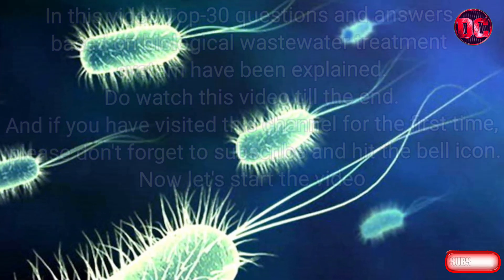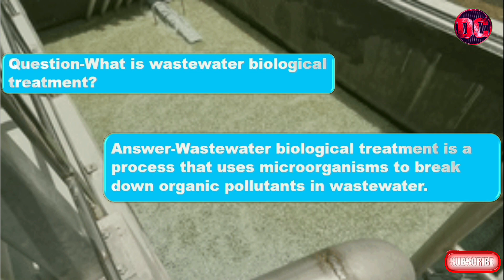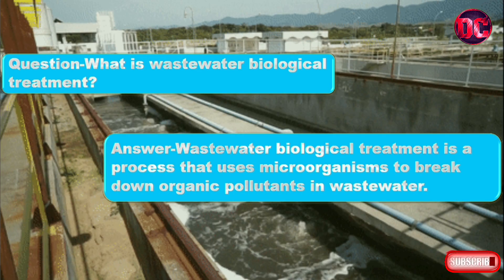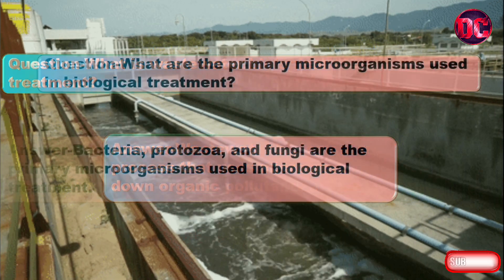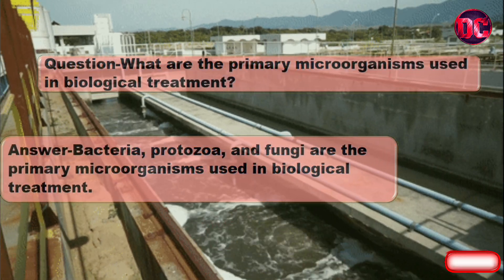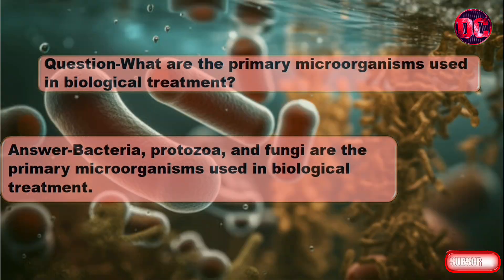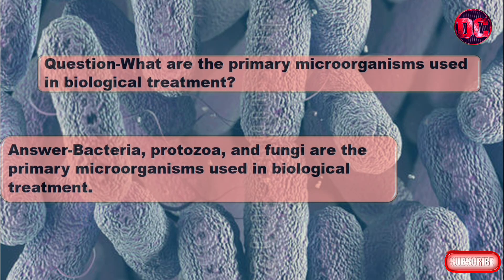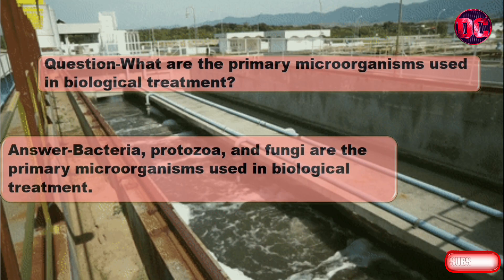Question: What is wastewater biological treatment? Answer: Wastewater biological treatment is a process that uses microorganisms to break down organic pollutants in wastewater. Question: What are the primary microorganisms used in biological treatment? Answer: Bacteria, protozoa, and fungi are the primary microorganisms used in biological treatment.